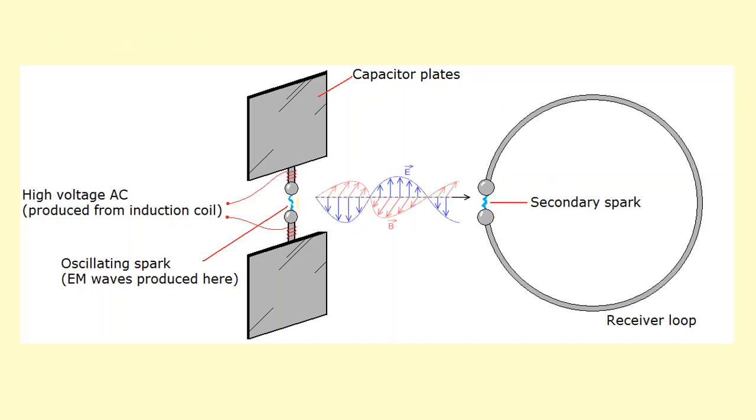Hertz also noticed that when he held this receiver loop near the setup, a secondary spark was being produced between the gaps there. The reason for this is because of the magnetic field. The magnetic field was going in and out of the loop, creating a change in flux in the loop. According to Faraday's law, an EMF will be induced. When this EMF is induced, a spark is produced across the gap.